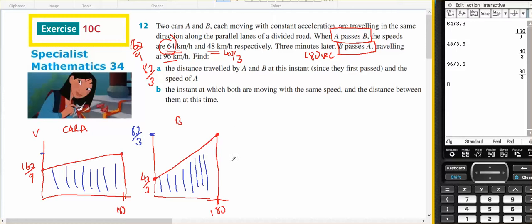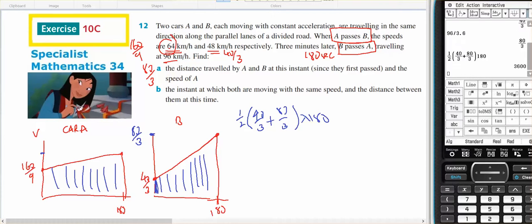Okay, so since this is area, I'm going to use the trapezium rule, and in B's case, it's going to be, the distance travel will be a half, A plus B, so 40 on 3, plus 80 on 3, times 180. So they traveled 3,600 meters, that's how far they traveled.